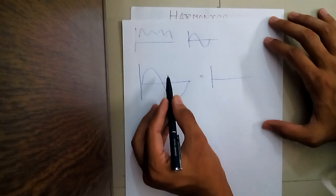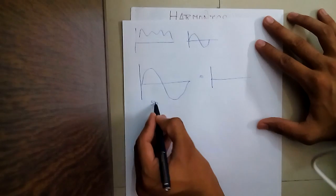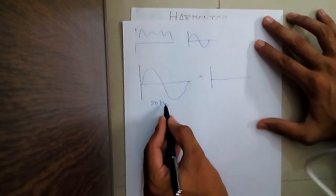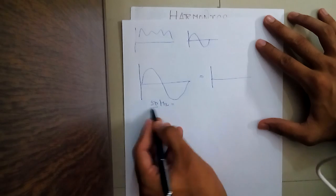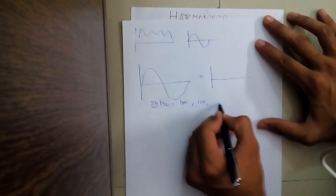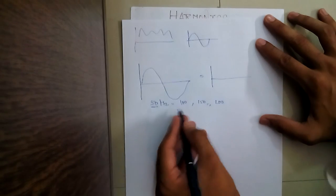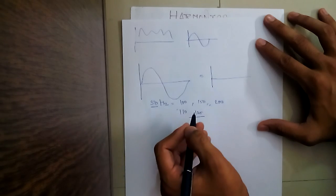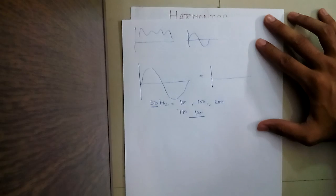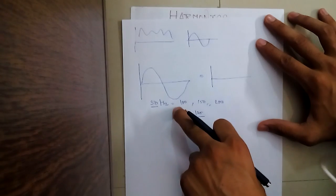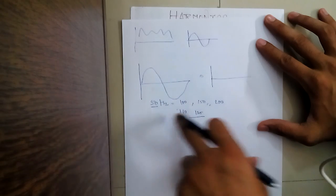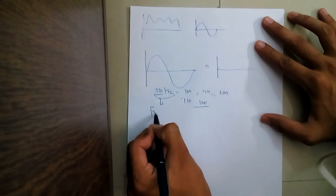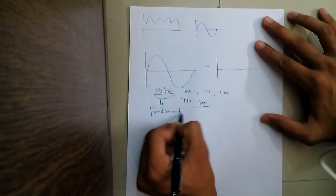So what does it mean? Suppose I have some sinusoidal waveforms with a frequency of 50 Hz or 60 Hz. Only those waveforms which have a frequency of integral multiple of this — maybe 100, maybe 150, 200 — only those will be called harmonics. If I have some waveform having a frequency of 110 or 125, that will not be called a harmonic. The original frequency will be called the fundamental frequency.